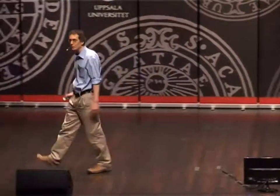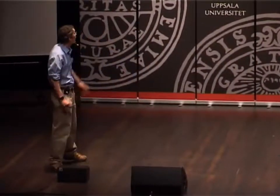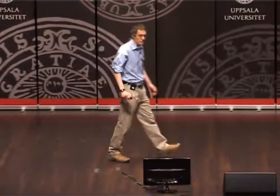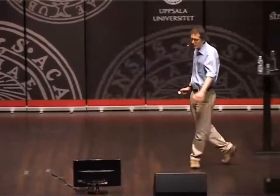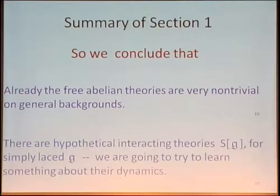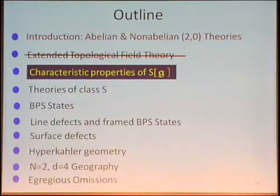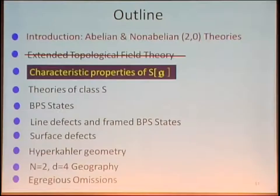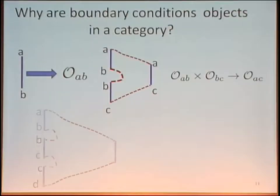We get some kind of six-dimensional theory with light dynamical strings. The question is, is it a field theory? This was first stressed by Zeiberg that it's actually a local quantum field theory, which is not obvious given the elephant in the room, which we're going to pretend is not there, and we're simply going to focus in this talk on the local quantum field theory. To summarize section one: there are free abelian theories that are already non-trivial on general backgrounds, and there are even more subtle interacting theories.